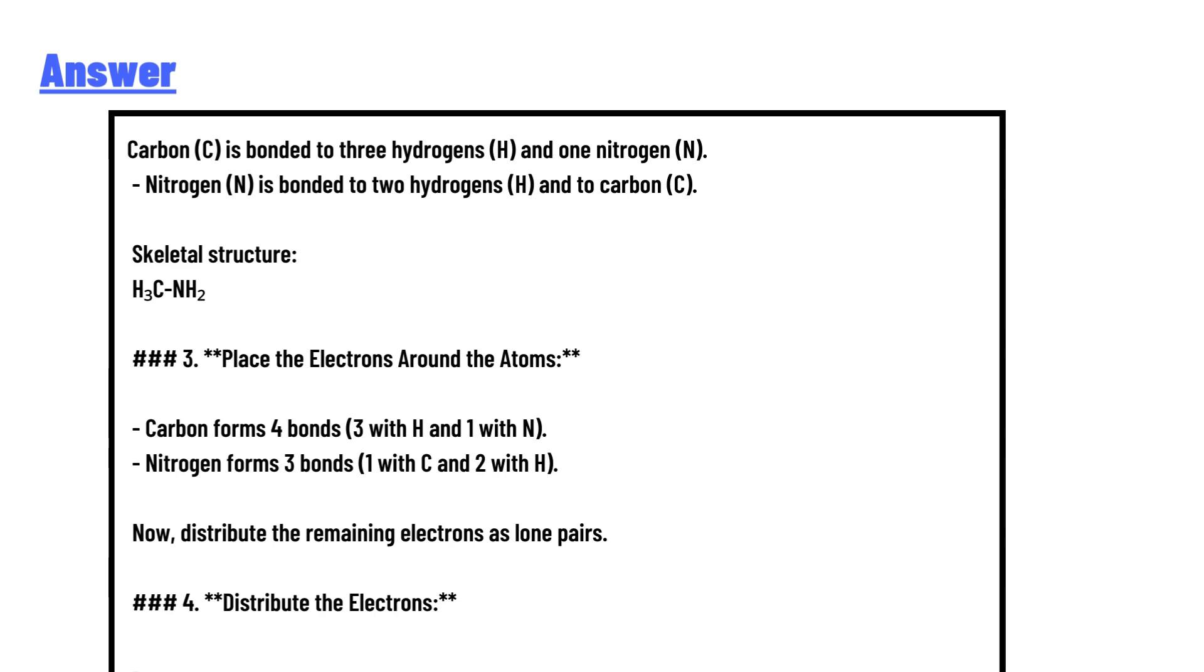Step 5: Verify and adjust. Check that each atom has a complete octet or duet for hydrogen. Carbon: 4 bonds satisfied, no lone pairs needed.